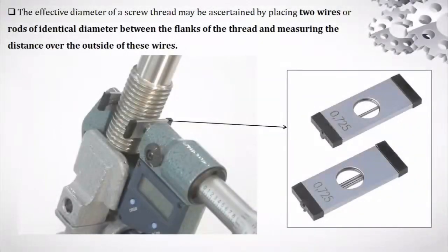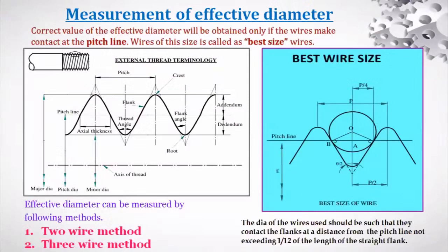Measurement of the effective diameter — also called the pitch diameter — can be done using two methods: the two-wire method and the three-wire method. Based on the size of the wire being used, either two or three wires are employed to measure the effective diameter of a given screw thread, as discussed in the previous class.